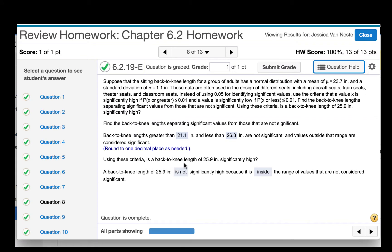Using these criteria, is a back-to-knee length of 25.9 inches significantly high? 25.9 is within this interval from 21.1 to 26.3, and so we would say that it is not significantly high because it is inside that range of values that are not considered significant.